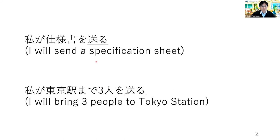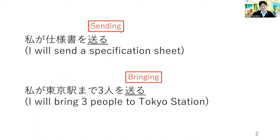Here we have two Japanese sentences. The first is 'Watashi ga shiyosho okuru,' meaning 'I will send a specification sheet.' The second is 'Watashi ga Tokyo-eki-made 3-nin okuru,' meaning 'I will bring three people to Tokyo Station.' In these examples, the same verb 'okuru' is used, but the meaning is different — 'send' in the first case and 'bring' in the second. To make computers understand this difference, we need to give a kind of label like 'sending' and 'bringing.' This is the background of this study.